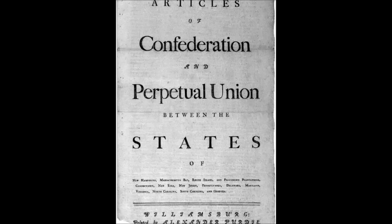The Articles of Confederation — you might remember from your civics class in middle school — was the very first governing document that the United States ever operated under. It's not a very good government. You're going to see it has a lot of weaknesses, and actually those weaknesses were put in place on purpose.